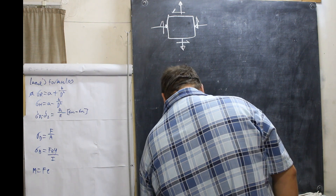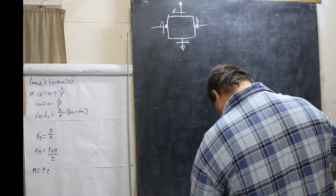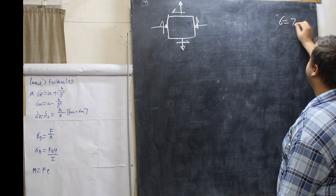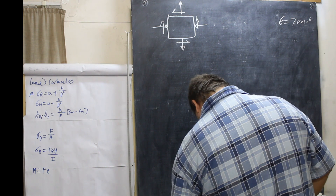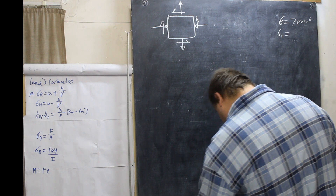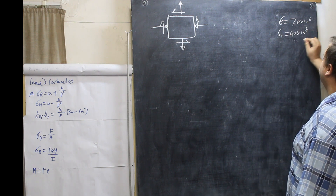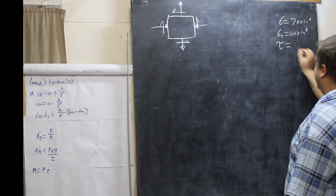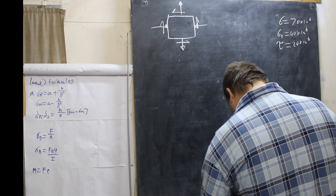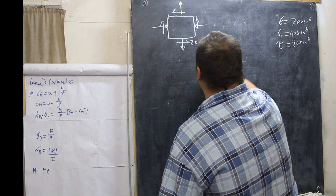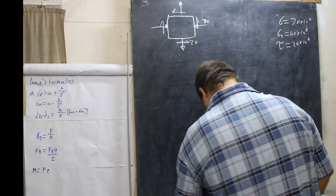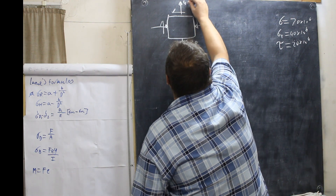So let's draw and put in our values. We have a compressive stress of 70 × 10⁶, a tensile stress of 40 × 10⁶, and a shear stress of 20 × 10⁶, all acting on the planes. So this one is 20, this one is 70, and this one up here is 40. Now you know where all your stresses are going.